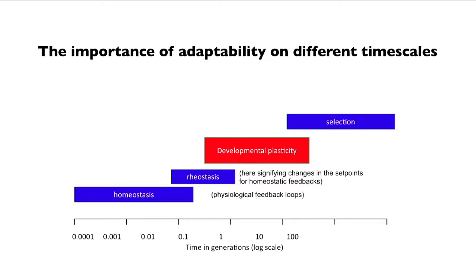Then there's developmental plasticity. That is the kind of thing we're talking about now, where something happens once early in life and it has effects for the entire remainder of the life — on the time scale of a complete generation. And then there's selection and genetic response through standard evolutionary means, usually on a scale of 10,000 generations.